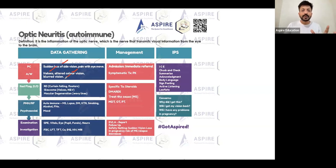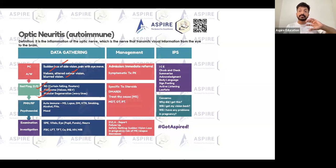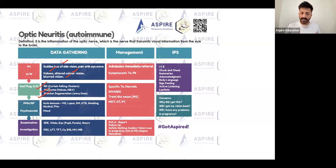You need to rule out some differentials. If they have color halos, you need to rule out angle closure glaucoma. Retinal detachment is also important - you can ask about a curtain falling over the vision. Macular degeneration is another differential, but it tends to present in elderly patients with wavy lines and slowly progressive symptoms, whereas optic neuritis tends to present in young patients with symptoms coming on quickly.